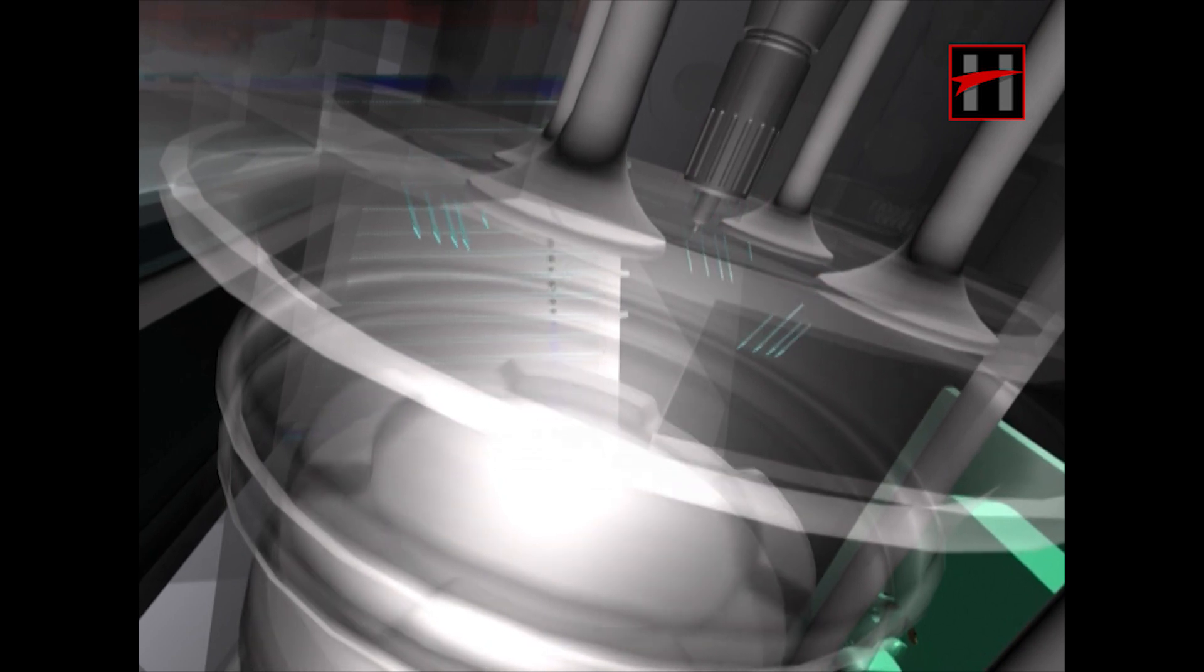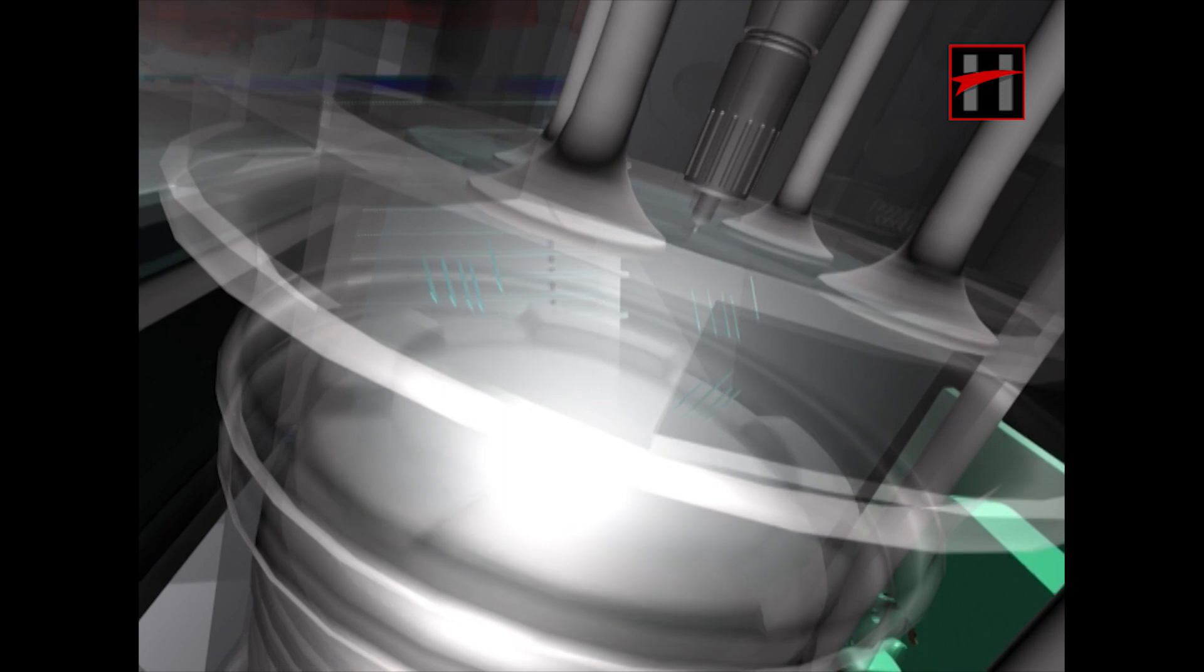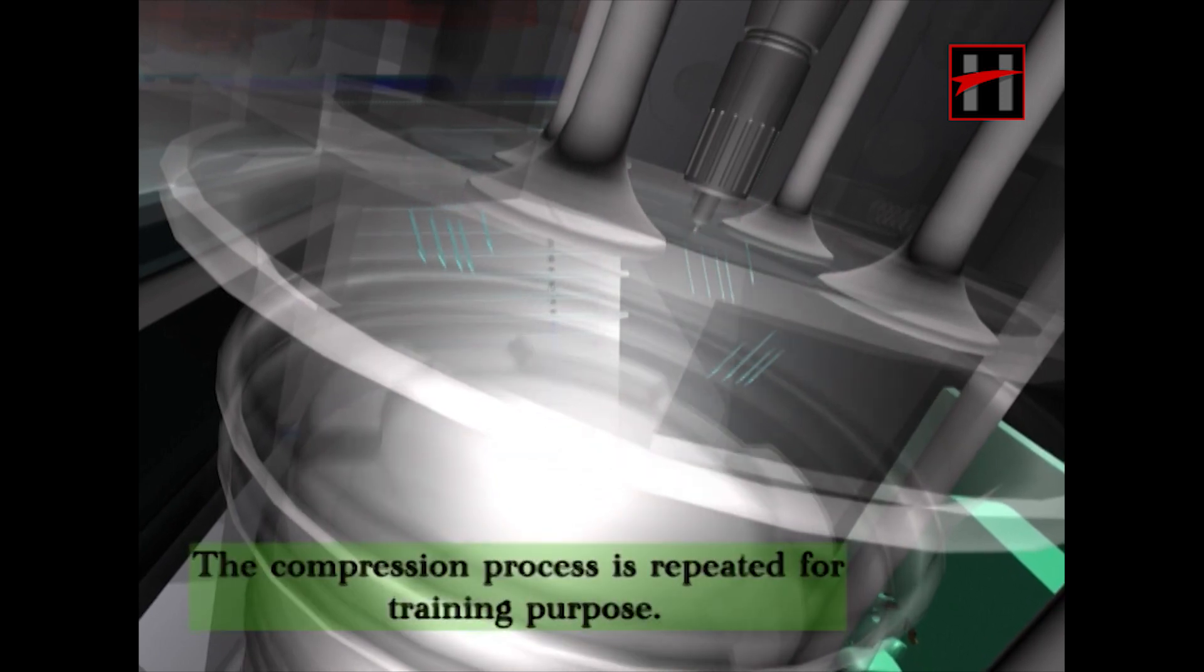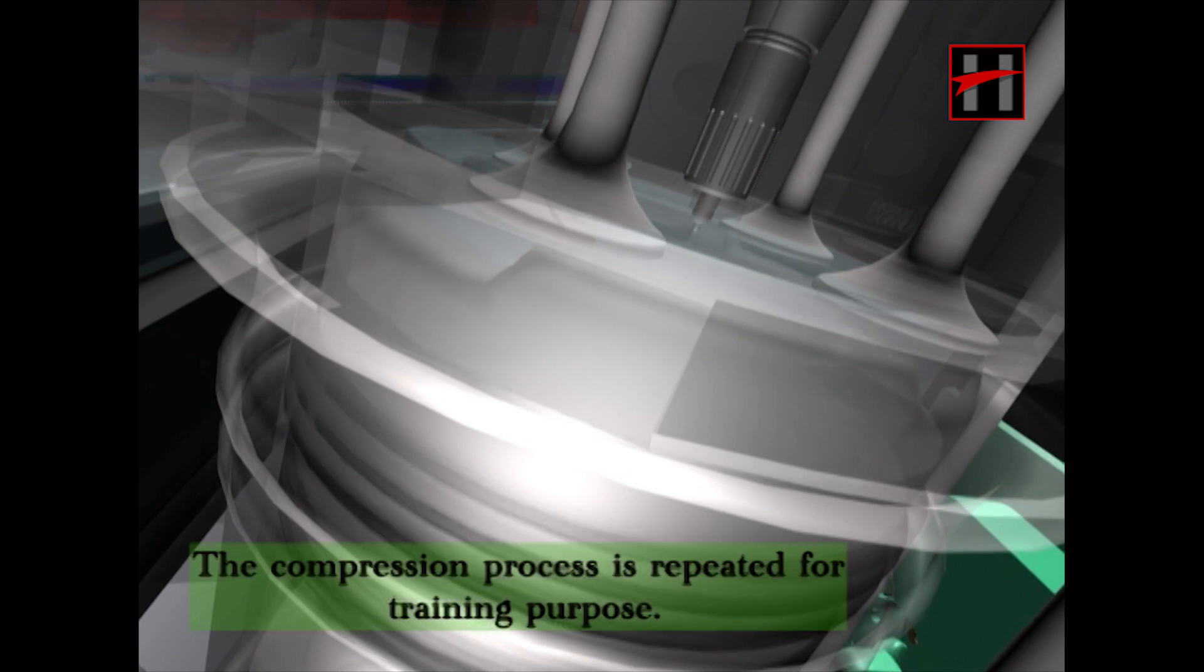Now, the piston starts moving from BDC to TDC due to which air in the cylinder starts getting compressed with more pressure and its temperature also starts increasing. As the piston reaches the TDC, air gets fully compressed and becomes very hot.